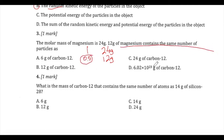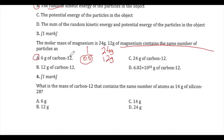The question asks which of the options contains the same number of particles. We have half a mole of magnesium, so we're looking for which option also gives half a mole. That means we want mass divided by molar mass to equal one half. The answer is A: 6 grams of carbon-12, because 6 divided by 12 is one half.